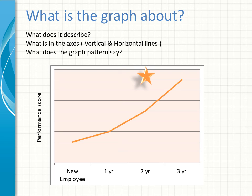Remember the vertical side is the side that runs from the top to the bottom and the horizontal side runs from the left to the right. Okay, so here in this sample graph we have, the horizontal side has got new employee, one year, two year, three year, and then also it has performance score. Now what is the graph all about?